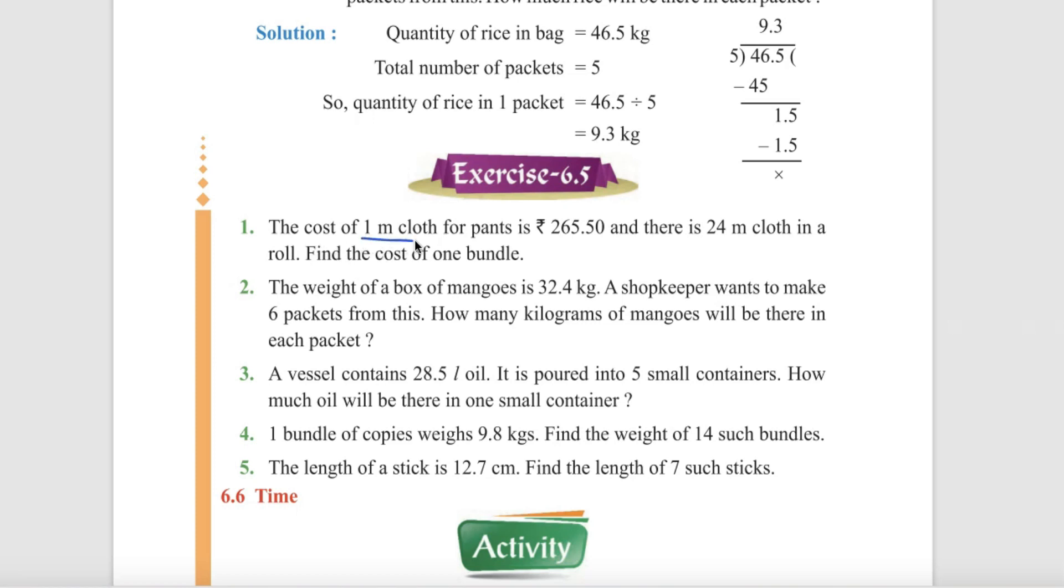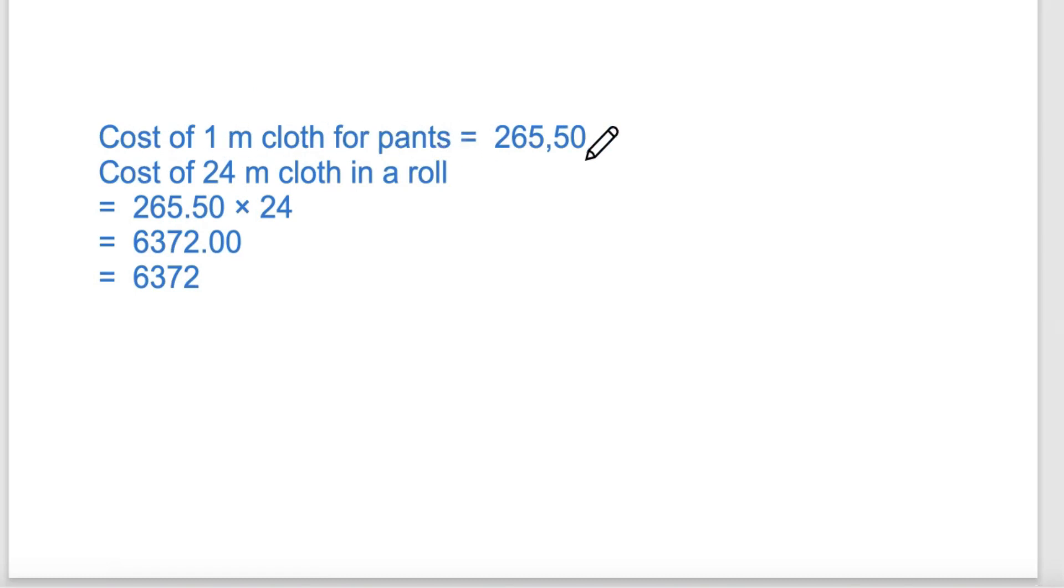The cost of 1 meter cloth is 265.50 rupees, and there is 24 meter cloth in a roll. If I have to find the cost of 24 meter cloth, I have to multiply the cost of 1 meter cloth. The cost of 1 meter cloth is 265.50. Here is the decimal. The cost of 24 meter cloth, how much do we multiply? Simply multiply it, give 24. Think about it and multiply it. If you have a decimal, we will have two digits. This will come, the answer will come 6372. We multiply it, easy?